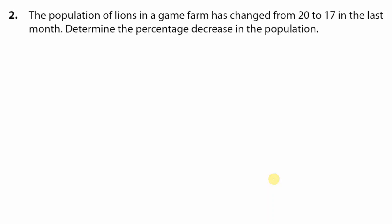Okay so number two I'm going to give you a chance to attempt this, making use of what we already know from the previous slide. The population of lions in a game farm have changed from 20 to 17 in the last month, determine the percentage decrease in the population. So my intent is going to be to draw firstly a time diagram, determine what was the old, determine what is the new, use our rhyme new minus old over old times 100 over 1, and substitute back.